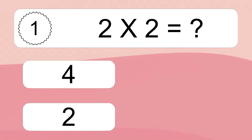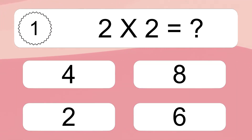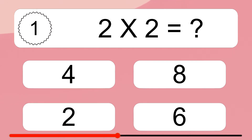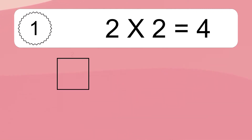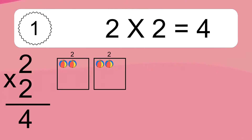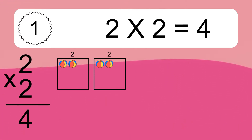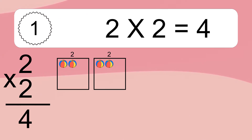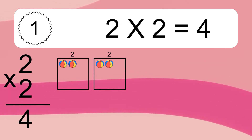Two times two equals what? Two times two equals four. We have two boxes, and each box has two colorful balls inside. If you count all the balls in all the boxes together, you will have two times two balls. This equals four balls.